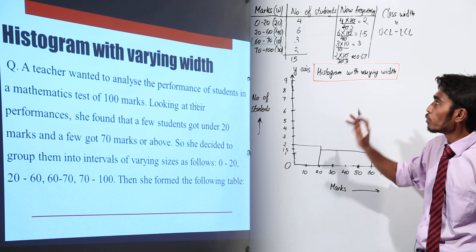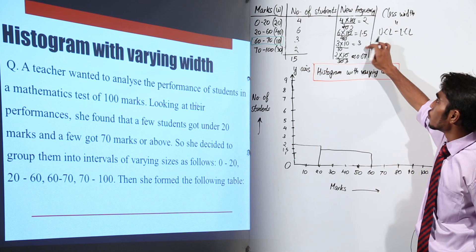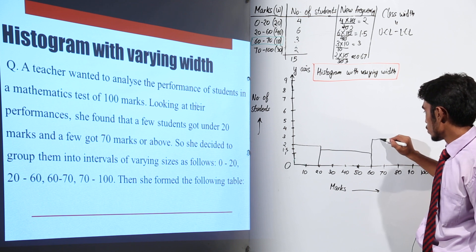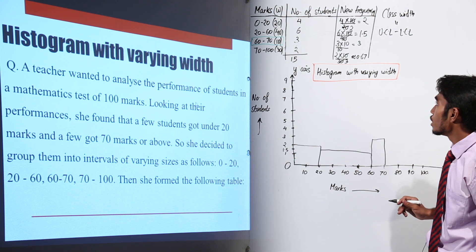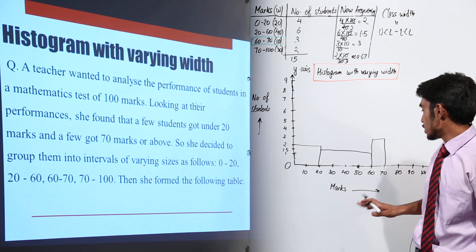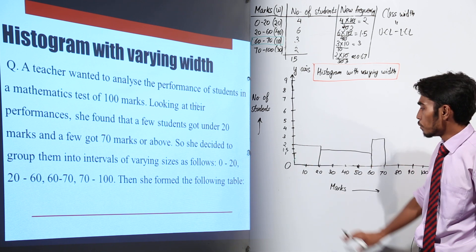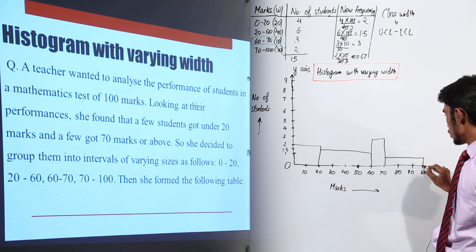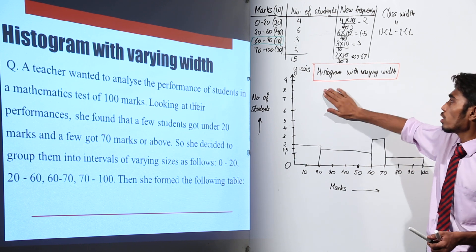This is the second class interval 20 to 60. Now the third class interval 60 to 70 has class width 10 and new frequency 3. So I am going to plot 3 on the y-axis and 60 to 70 on the x-axis. For the fourth class interval, I have 0.67 on the y-axis and 70 to 100 on the x-axis. So 0.67 will lie somewhere in between 0 and 1. Now this is the histogram that we have drawn for varying width.